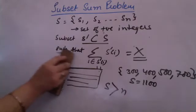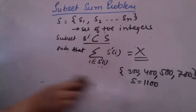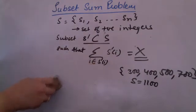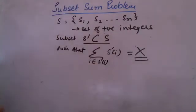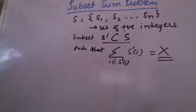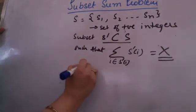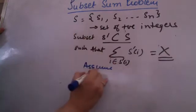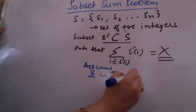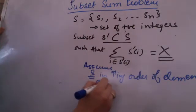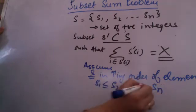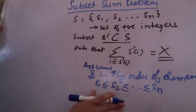So what do we do in the subset sum problem when we are trying to do backtracking? With dynamic programming we'd need 1100 times 4 — that's 4400 calculations in a matrix — which I don't want. So I will be solving the same problem using backtracking. I will create a state space tree. First, I assume the set S is in increasing sorted order: S1 ≤ S2 ≤ ... ≤ Sn.